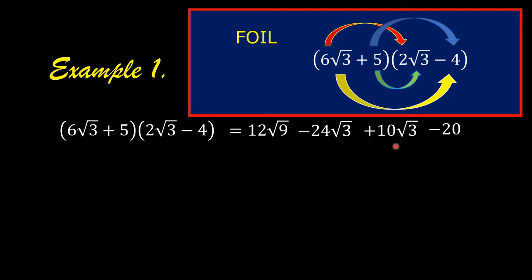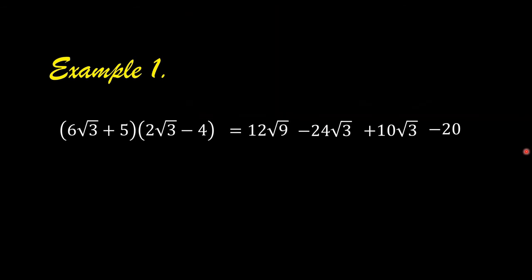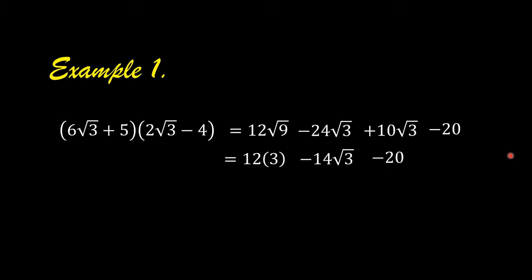Then combine the terms that are similar. These two terms are similar because they have the same radical, square root of 3. So we have 12 times 3 — the square root of 9 is 3 — and then negative 24 plus positive 10 is negative 14, and then square root of 3, minus 20. 12 times 3 is 36, minus 14 square root of 3, minus 20.